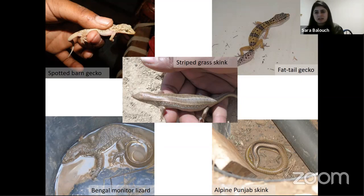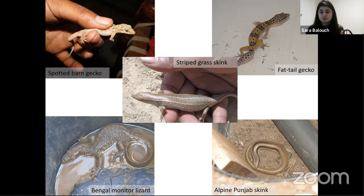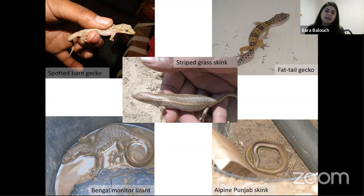The fat-tail gecko is unfortunately declining in Pakistan because illegal trade is happening — a lot of people are catching and selling it for a few bucks. When I started my surveys in those areas, people came up and told me this lizard had already gone extinct from the area, but it wasn't. I found it but couldn't report it because people would come and start catching them and selling them. This is something I'm looking forward to working on in the future — to save them and do something about the illegal trade.